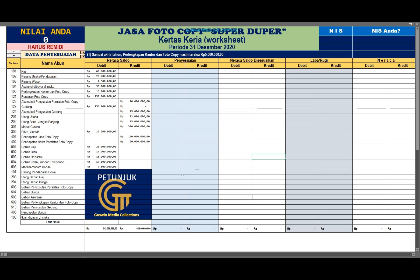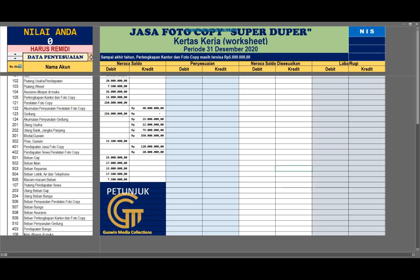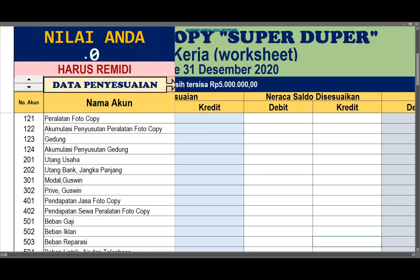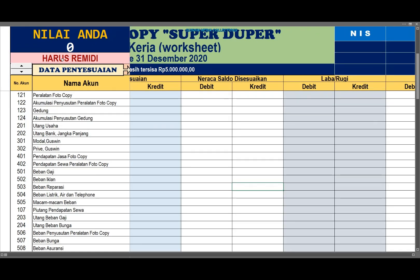Tidak perlu menggunakan kertas dan skornya bisa langsung muncul di sini, sampai nilai tertinggi yaitu 100. Nanti kalau nilainya sudah 70 ke atas, maka di sini akan muncul status tuntas. Dan ini bisa di-edit oleh guru.